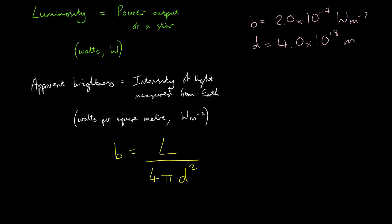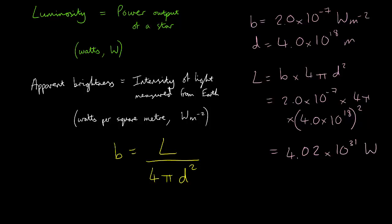What is Betelgeuse's luminosity? So L equals B multiplied by 4 pi d squared. So we substitute the numbers in. 2.0 multiplied by 10 to the power of minus 7 multiplied by 4 pi multiplied by 4.0 times 10 to the power of 18 all squared. That's the power output of Betelgeuse.